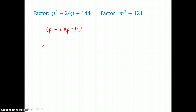So when I check and distribute on the perfect square trinomial p squared minus 24p plus 144, p times p is p squared, p times negative 12 is negative 12p, negative 12 times p is another negative 12p, and negative 12 times negative 12 is positive 144. Adding those middle terms, I get a total of negative 24p, and I get my perfect square trinomial back. So that perfect square trinomial factored into the quantity p minus 12 squared.